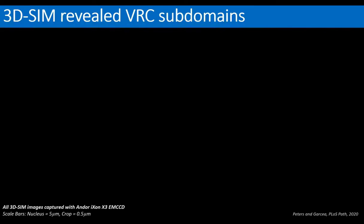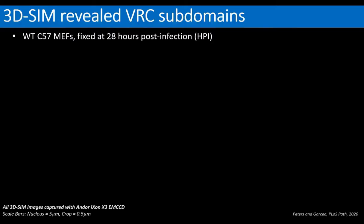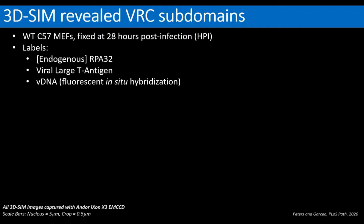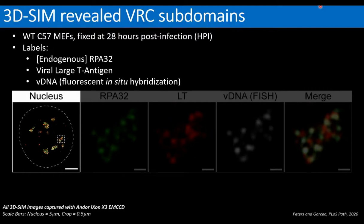I wondered if these small spatial differences could represent functionally distinct VRC subdomains. I used 3D Structured Illumination Microscopy, or 3D SIM, to investigate this. These experiments used wild-type fixed cells (not the GFP-RPA cells). I labeled cells for endogenous RPA32, the viral large T antigen protein, and viral DNA by fluorescent in situ hybridization (FISH), which labels all viral genomes in the cell.